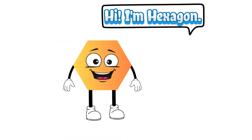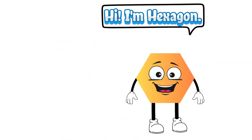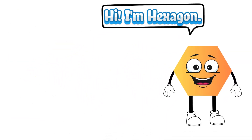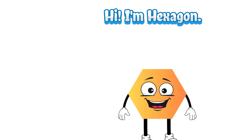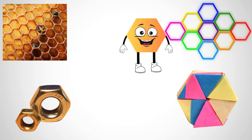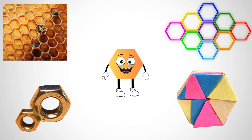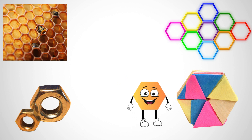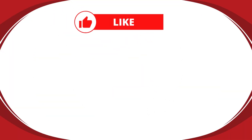Hello kids. I am hexagon. I have six corners. Some examples of hexagonal-shaped objects are honeycomb, hexagonal frame, bolts and nuts, hexagonal paper.